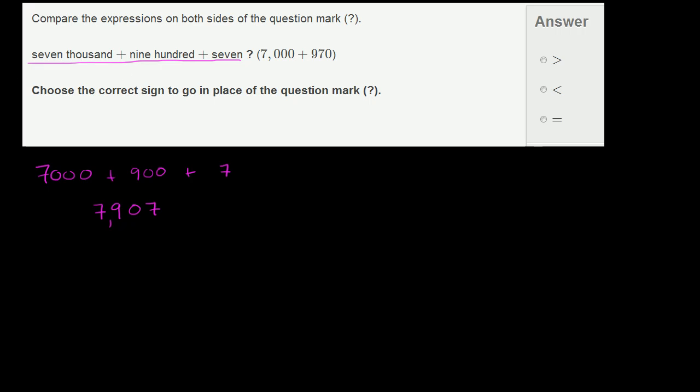Now let's compare that to what we have on the right-hand side of the question mark. On the right-hand side, we have 7,000 plus 970, which is 7,970. Or if we wanted to expand it out, we could write that as 7,000 plus 900 plus 70. And then we have 0 ones.